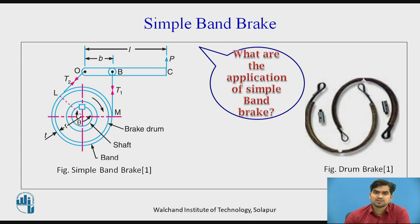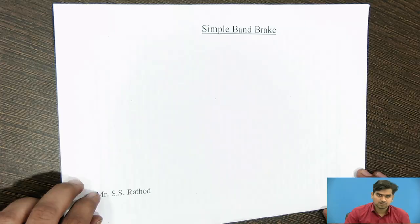This is a simple diagram of a band on which two hooks are there. We are attaching the two hooks to the lever, and in between the hooks the rotating drum is there. When we apply force P on the lever, the rotating drum will get stopped. We will see the derivation for this simple band brake for finding the braking torque or the force applied at the end of the lever.